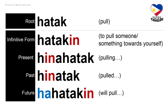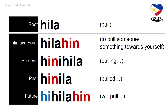Root word: hatak — meaning pull. Infinitive form: hatakin — to pull someone or something towards yourself. Present tense: hinahatak — pulling. Past tense: hinatak — pulled. Future tense: hahatakin — will pull someone or something towards yourself.